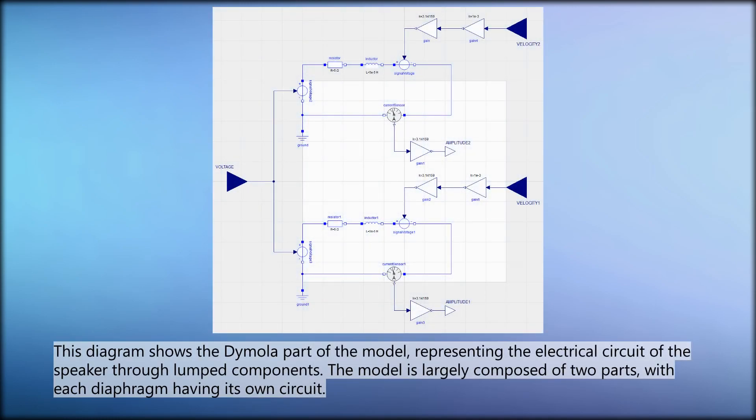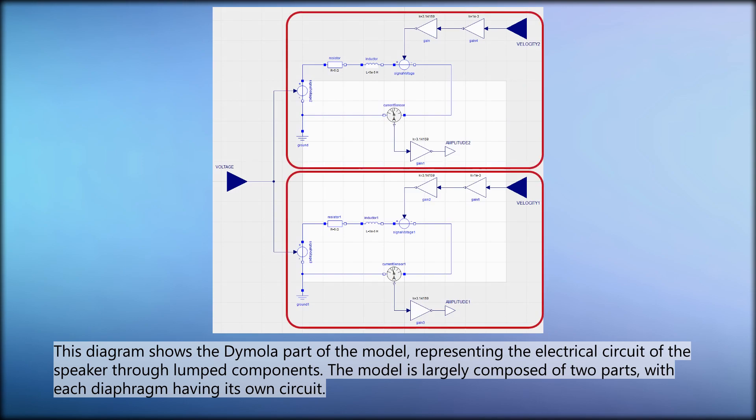This diagram shows the Dymola part of the model, representing the electrical circuit of the speaker through lumped components. The model is largely composed of two parts, with each diaphragm having its own circuit.